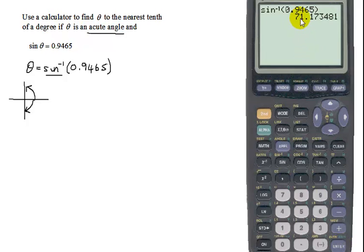So my answer is 71.173 dot dot dot. And we needed it rounded to the nearest tenth. That means this position, so the seven is going to round that one up to a two. So my answer is going to be 71.2 degrees.